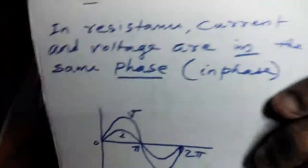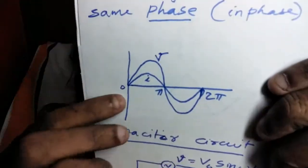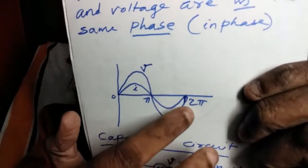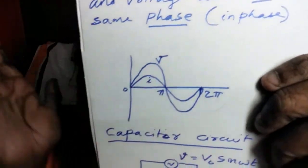In-phase components will always consume maximum electrical power — we will see that later. So current and voltage are in phase in a pure resistance. There is nothing special in this circuit. This is the simplest form of AC circuit. Now we pass on to the capacitive circuit.